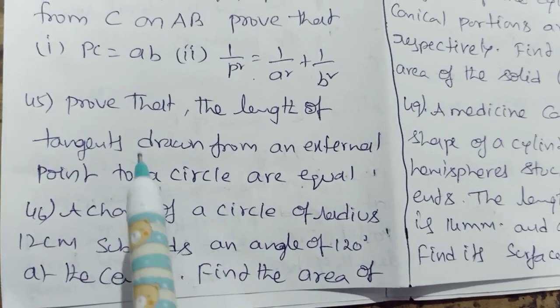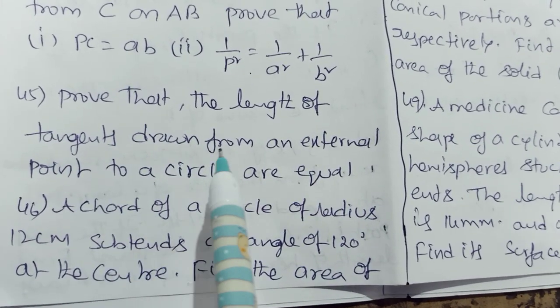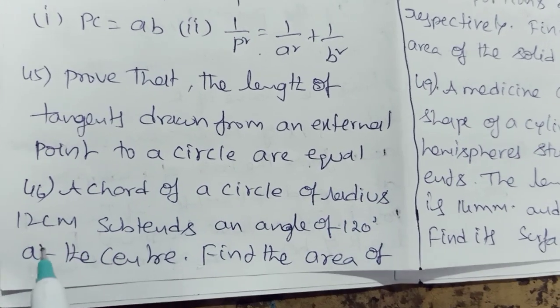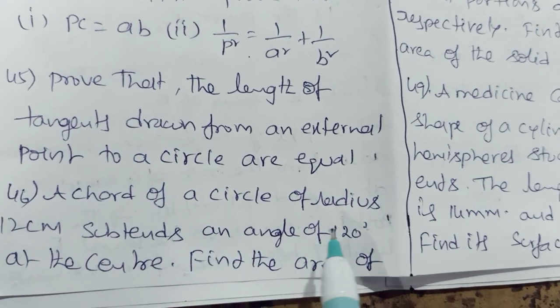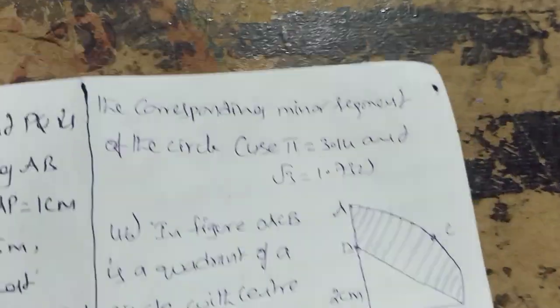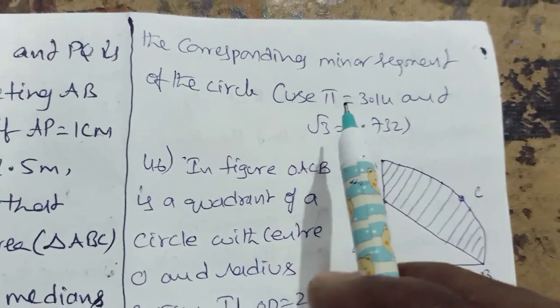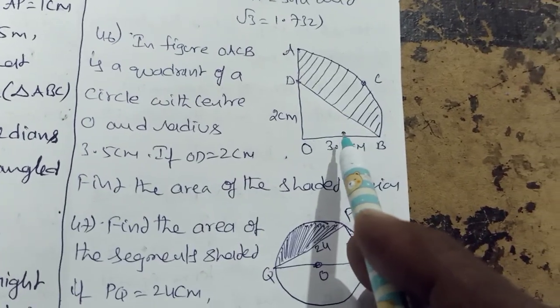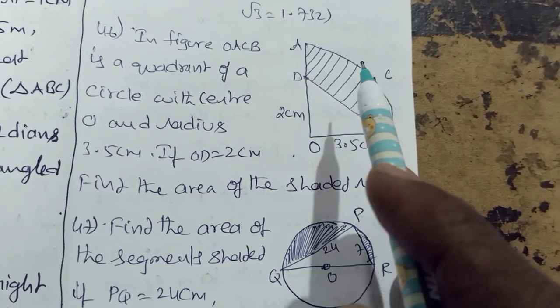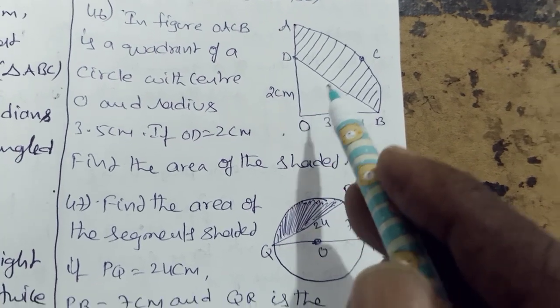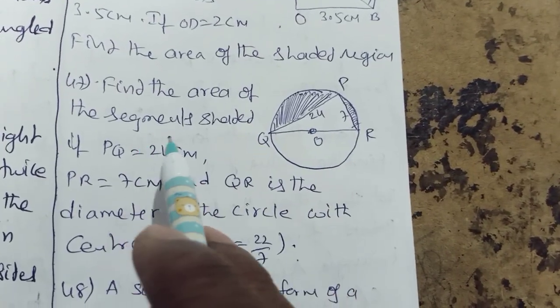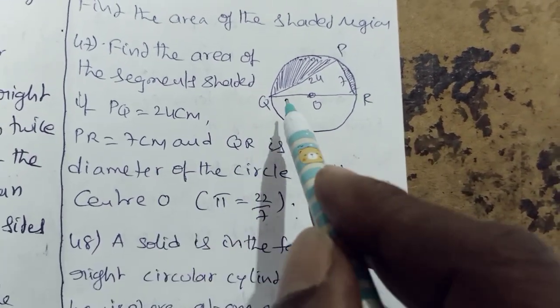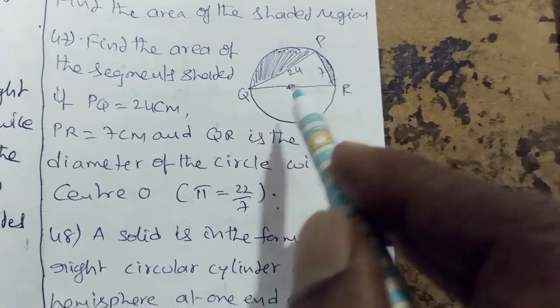Tangents and secants. Prove that the lengths of tangents drawn from an external point to a circle are equal. A chord of a circle of radius 12 cm subtends an angle of 120 at the center. Find the area of the corresponding minor segment of the circle. Find the area of the shaded region where the quadrant of a circle has radius 3.5, OD is 2 cm. Find the area of the shaded segment where PQ equal to 24, PR is 7, and QR is the diameter of the circle with center O.